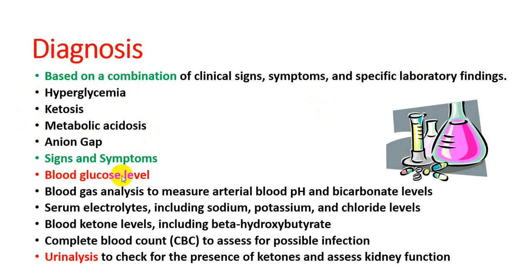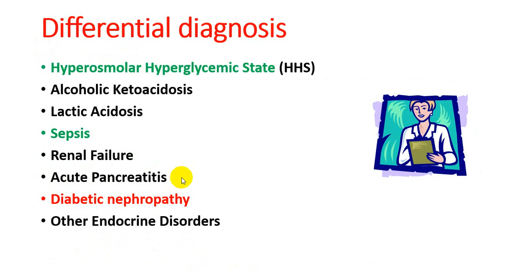On blood investigations, we check blood glucose, which is high. Blood gas analysis shows disturbed arterial blood pH and bicarbonate levels. Serum electrolytes — sodium, potassium, chloride — may also be abnormal. Blood ketone levels, such as beta-hydroxybutyrate, are elevated. Urine analysis shows increased ketone bodies and helps assess kidney function. A CBC can be done to assess for possible infection.